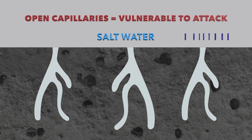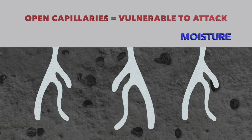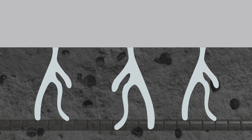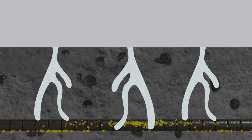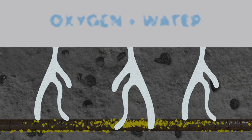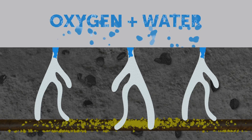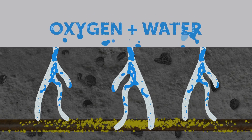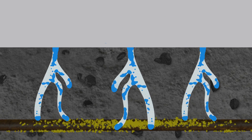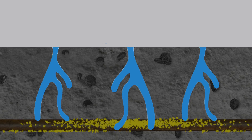The principal attack agent is moisture, which can lead to a number of problems, like corrosion of the embedded reinforcing steel. For corrosion to occur, you need three elements: steel that can rust, oxygen and water. The last two of which get into the concrete through these open capillaries.